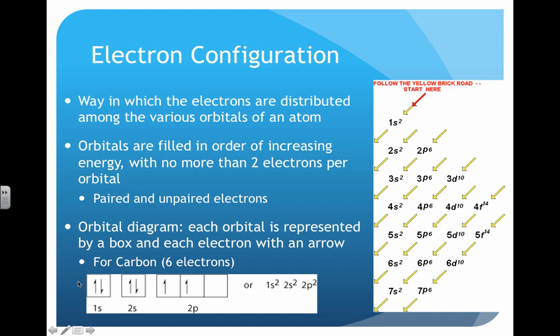1s gets two electrons because s only has one orbital, so it can only hold two electrons, and we represent this with an up and down arrow. Because we have four electrons left, we continue through here, move to the right, and then go down again.